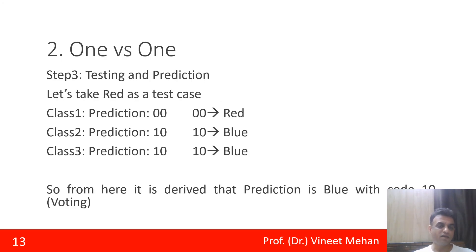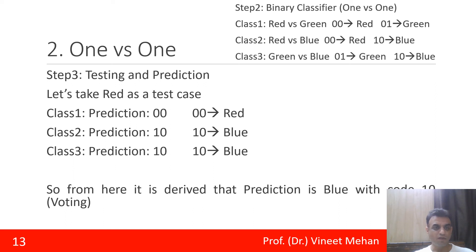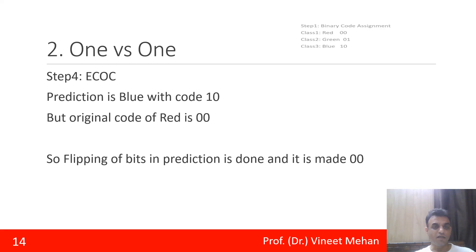Then when we are dealing with testing and prediction, let us take red as the test case. So for this, let us step back to step number two. If the prediction is 00, then 00 means a red. Class two predicts 10, that means it is a blue. Class three predicts it is 10, that means again a blue. So from here, if we carefully analyze the voting part, then there are two blues. So 10 is the final output that we are getting. That means when we are doing error correcting codes, then the prediction is blue with the code of 10, but the original code is of red, that is 00. So we need to flip the bits in prediction so that we could make it to original code, that is 00. 10 is to be flipped and made to 00.